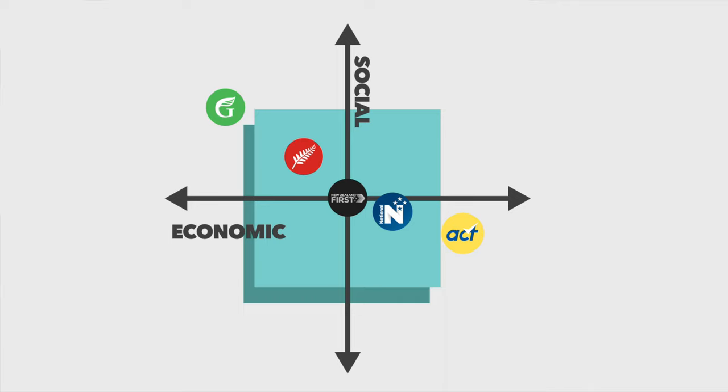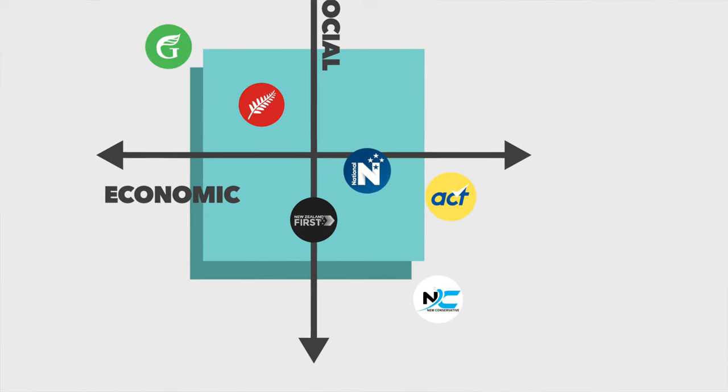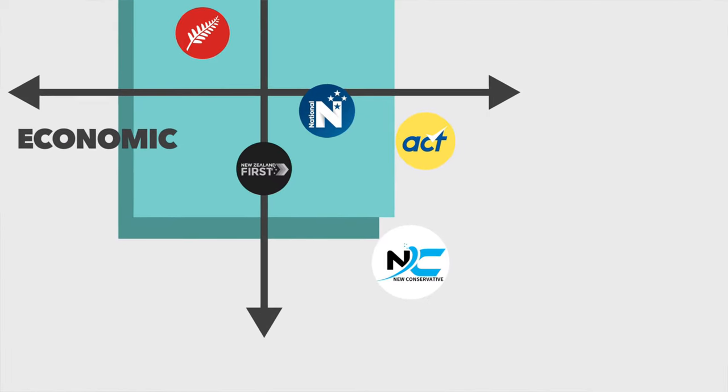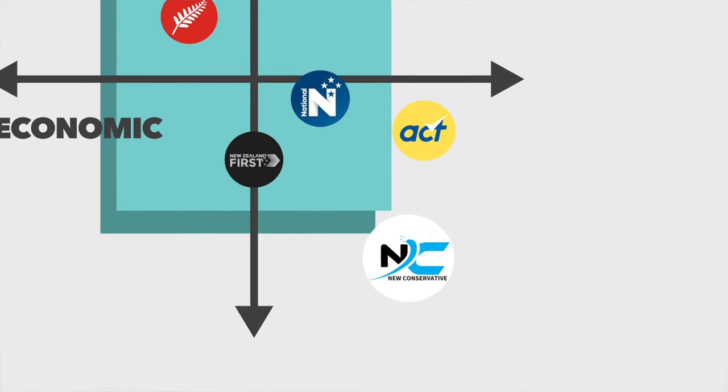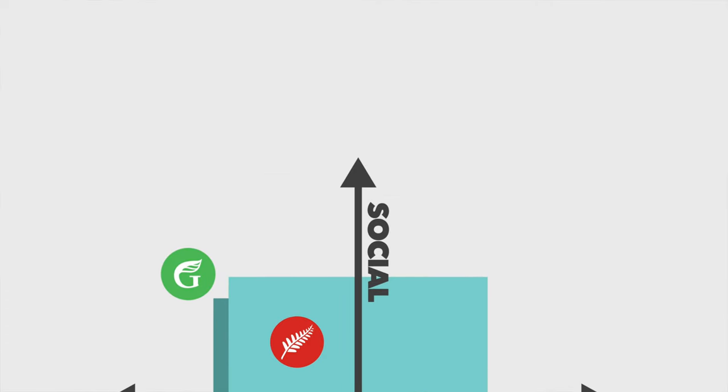The most socially conservative would be New Zealand First, but even they are not too vocal about their social views. There are a couple of much smaller parties who are really socially conservative. Parties like the New Conservatives, who are a bit louder recently and don't support the government getting involved in achieving social equality. But really they're small and sit quite far apart from all of our other parties.